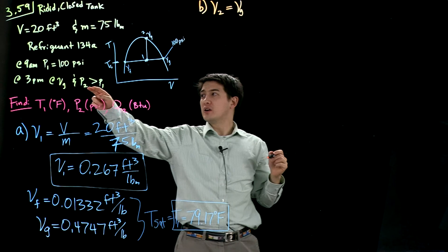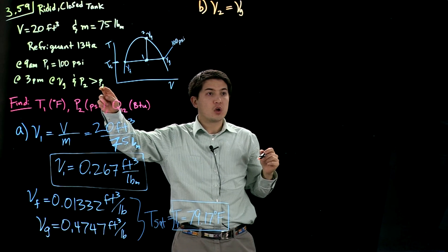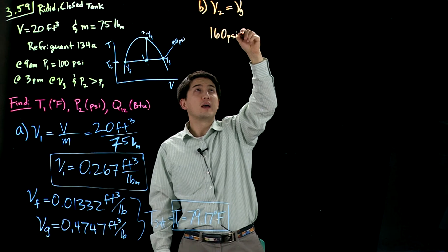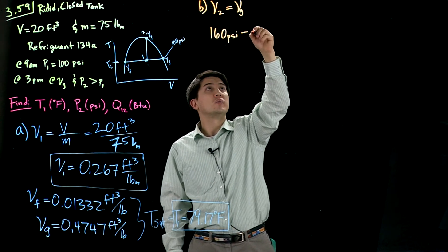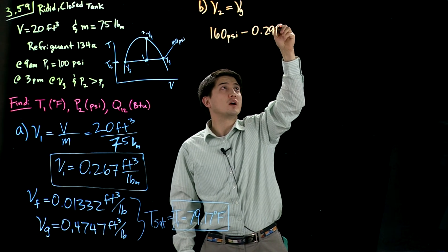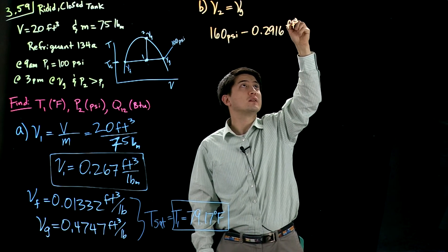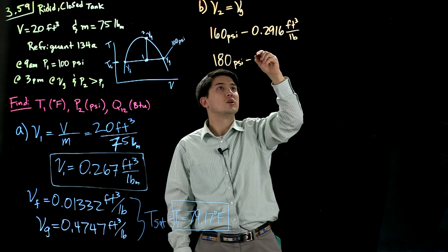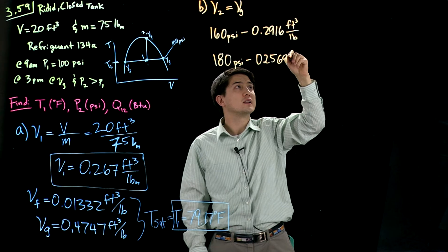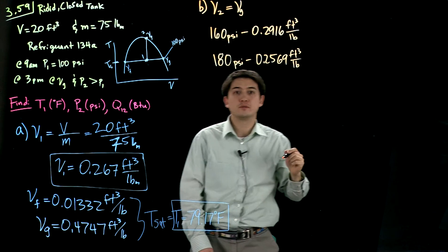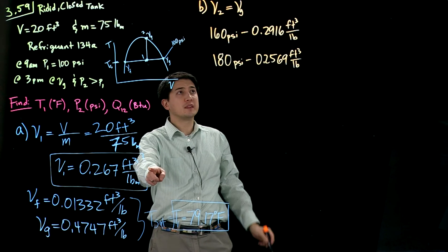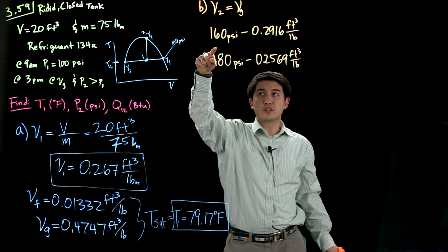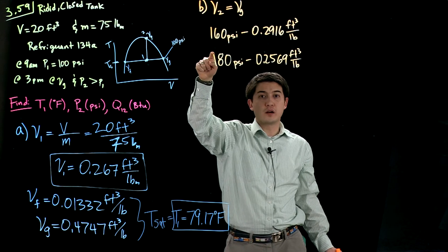So we're right on the edge and we're going to set our table and get values at 160 psi. We would be at 0.2916 cubic feet per pound. At 180 psi, we would be at 0.2569 cubic feet per pound. We know that we're at this state. So we're going to have to linearly interpolate between these two to find some pressure that we are at between these two on our table.